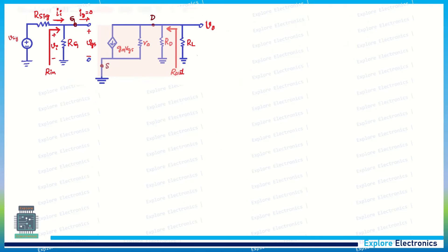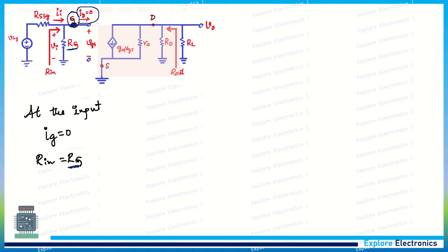Since IG = 0, the input resistance R_in equals RG. For the input voltage VI, we apply the voltage divider rule. The input is applied from the gate with RG present, and R_signal is also in the path. Using voltage divider: VI = V_signal × R_in / (R_in + R_signal), which is VI = V_signal × RG / (RG + R_signal).